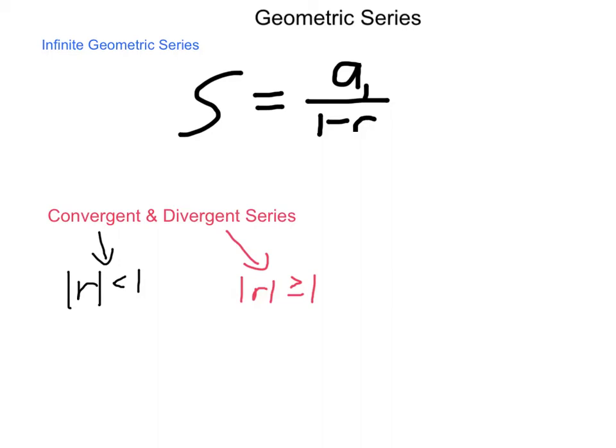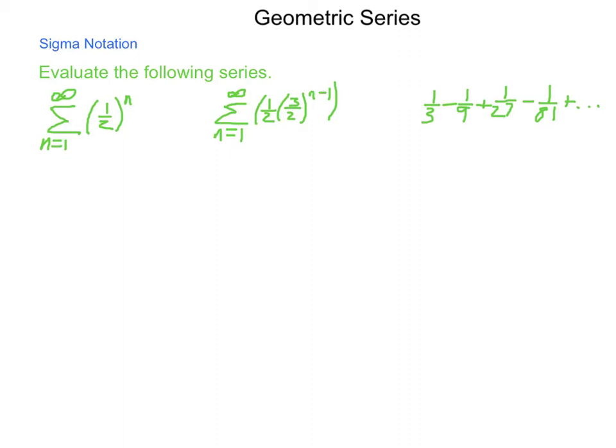Let's evaluate some series written in sigma notation. First one, where n goes from 1 to infinity of 1 half to the n. We need to figure out our a sub 1 and r values. a sub 1, if we substitute in 1, 1 half to the first power is 1 half. Our r value is we continue to multiply by 1 half. Using our sum formula, S equals 1 half divided by 1 minus 1 half. That's 1 half divided by 1 half, which is simply 1. If we add up all the half values to each other that go on forever, it will fill one object.